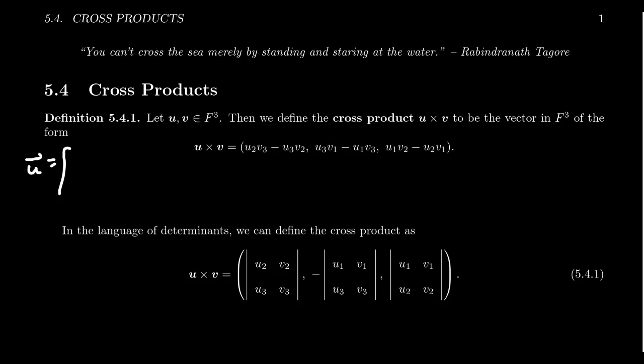So our vector u we can write as u₁, u₂, u₃, and our vector v we can write as v₁, v₂, and v₃. We're not specifying what the scalars have to be, they just have to come from a field. A little bit later in this lecture we will restrict to real numbers, but for the moment we can allow any scalar.